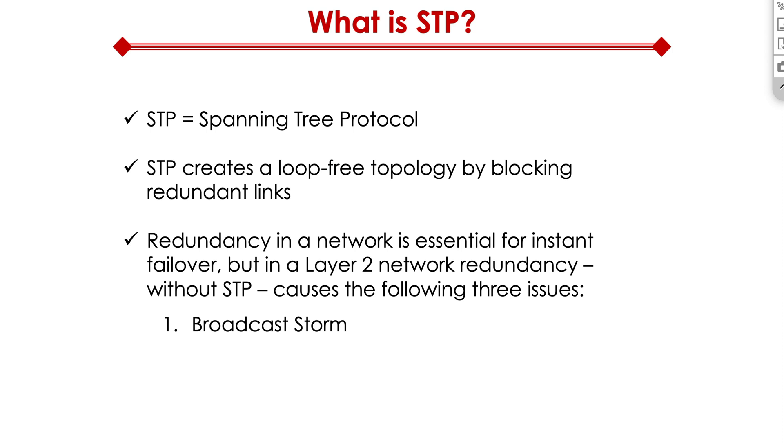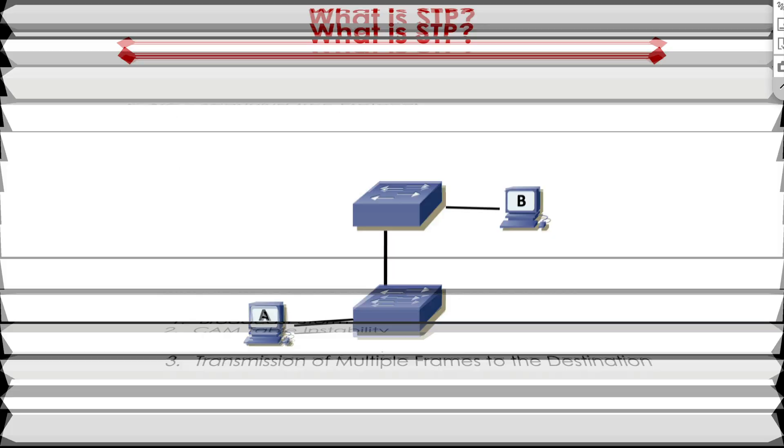And there are three big issues that I would like to bring to your attention. Issue number one, broadcast storm. Issue number two, CAM table instability. Issue number three, transmission of multiple frames to the destination. Well, what does that mean? Let me explain on the next slide.